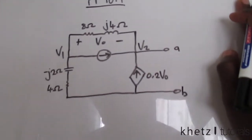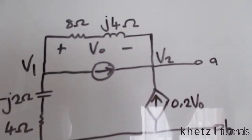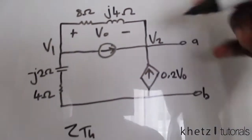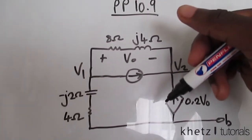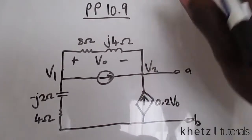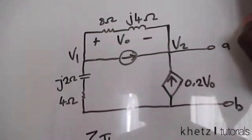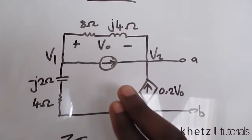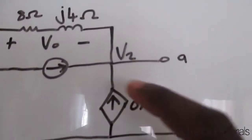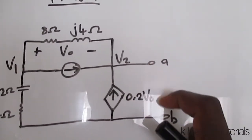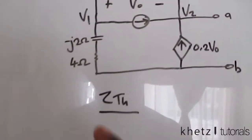Let's start with finding ZTH. To find ZTH you have to turn off all independent sources. You only have one independent source here, so you turn that off. Note that you have a dependent source, so you have to introduce a test source — another independent source. Here's the resulting circuit after removing the independent source.